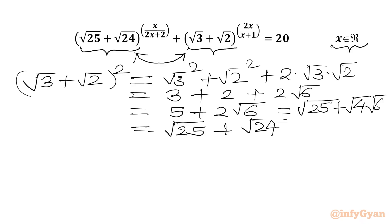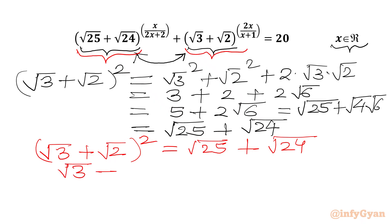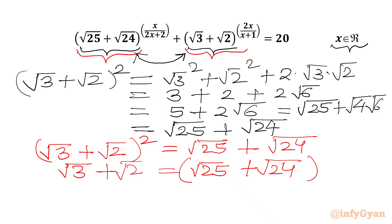Now we have one relationship between both the bases. Now I will consider square root of both sides. So I can write: root 3 plus root 2 whole squared equals root 25 plus root 24. Taking square root both sides, root 3 plus root 2 equals square root 25 plus square root 24, to the power half. And I can see that power half here.